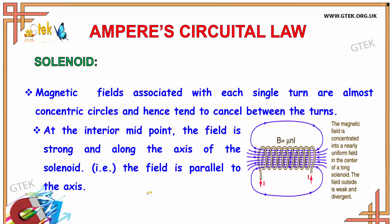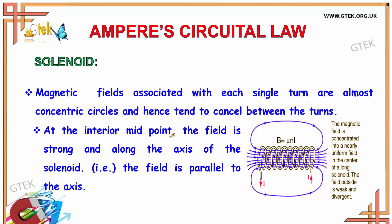The magnetic field associated with each single turn forms almost concentric circles, and hence they tend to cancel between the turns. At the interior midpoint, the field is strong and along the axis of the solenoid — the field is parallel to the axis. The magnetic field is concentrated into a nearly uniform field in the center of a long solenoid, while the field outside is weak and divergent. The current I passes through the solenoid, and the equation is given as B equals mu naught n I.